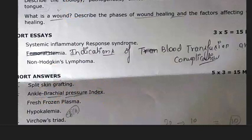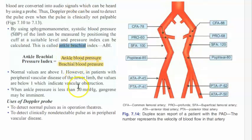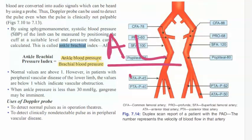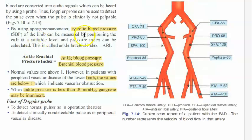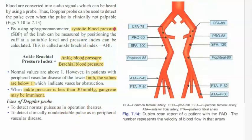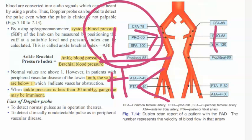Next question: Ankle Brachial Pressure Index. The ankle is the leg portion and brachial is the arm portion. You measure the systolic blood pressure at both sites using a sphygmomanometer and divide: ankle systolic BP over brachial systolic BP. Normally, ankle pressure is slightly higher, so the value is above 1 in normal individuals.